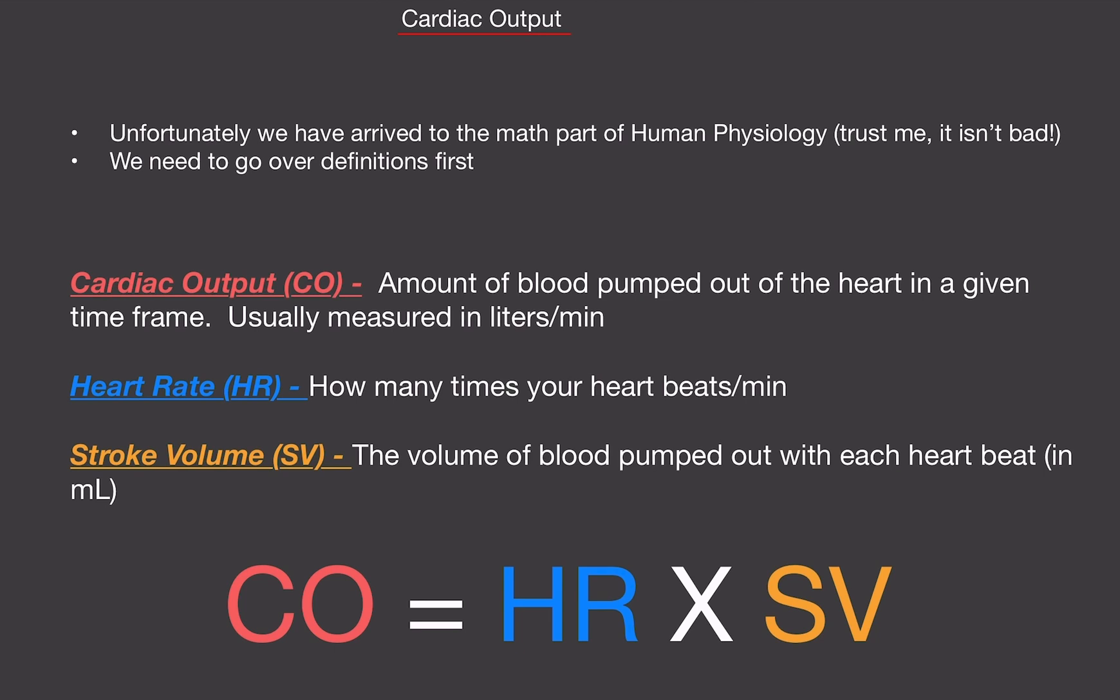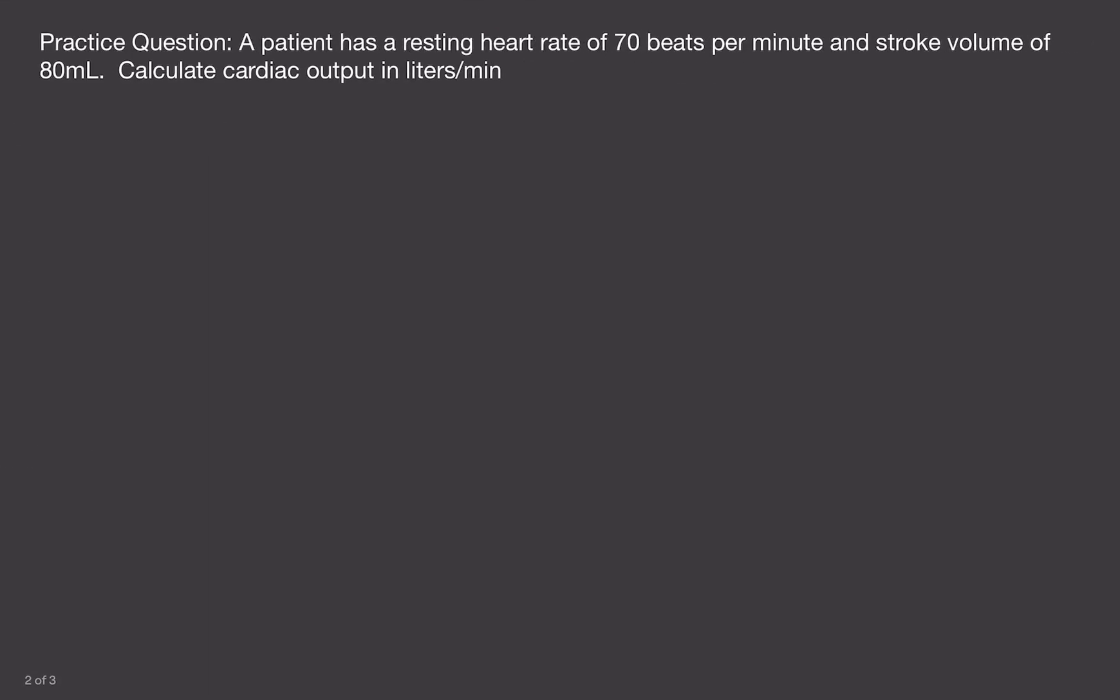Usually, on physiology exams, you are given a question like this. A patient has a resting heart rate of 70 beats per minute and a stroke volume of 80 milliliters. Calculate the cardiac output in liters per minute. Okay, so let's first write down what terms we actually have. What were we given?